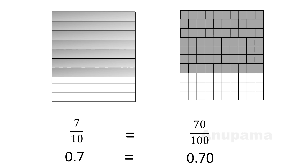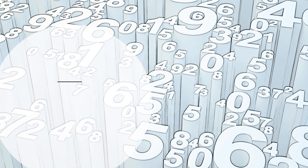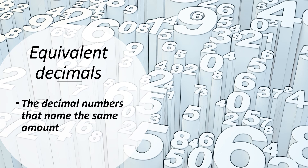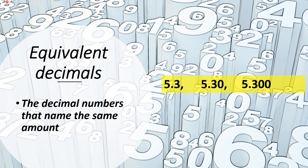So that's why we can say: equivalent decimals are decimal numbers that name the same amount. Another example: 5.3, 5.30, and 5.300 are all equivalent decimals.